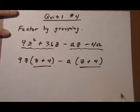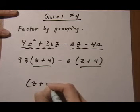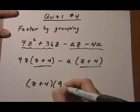And now we have common factor of binomials. Pull out the common factor z plus 4. We're left with 9z take away a.